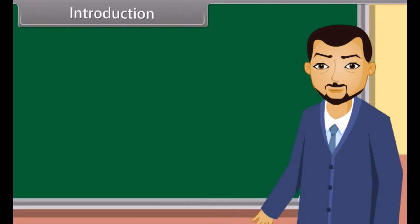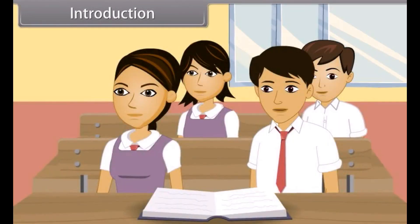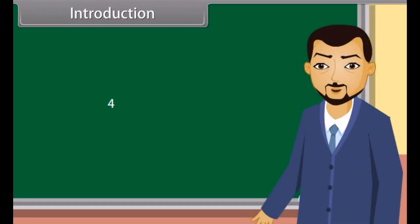Look at these numbers. Do you know what we call these numbers? These are the real numbers. An irrational number is also a real number. A rational number or an irrational number is called a real number. Today we will learn more about rational as well as irrational numbers.